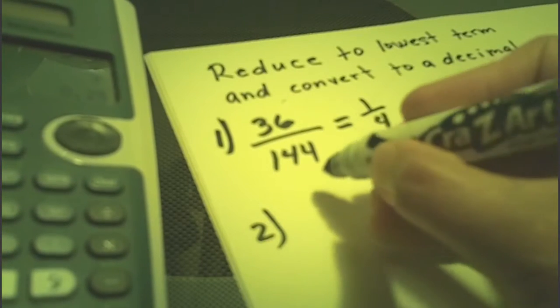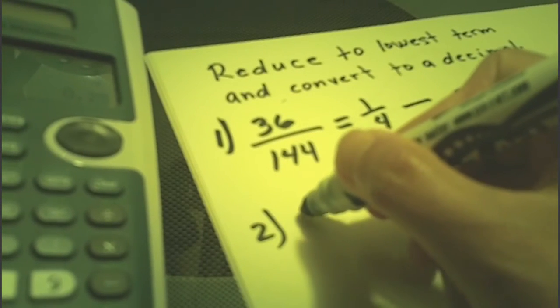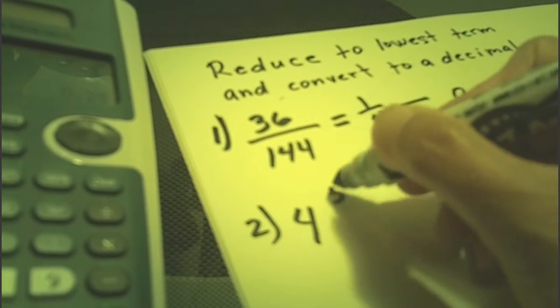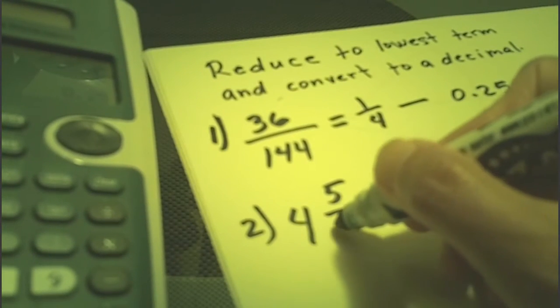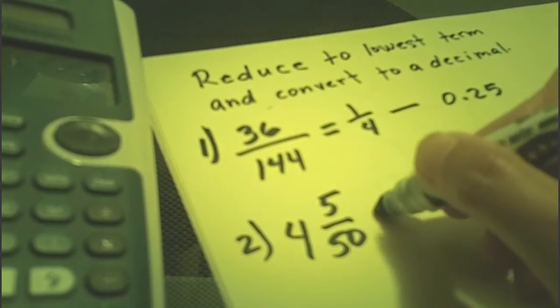We'll do a mixed number: four and five over 50. First, clear that by pressing the Clear button. For a mixed number, you should press the second green button and then press the N/D button — numerator over denominator — so you have a mixed number entry.